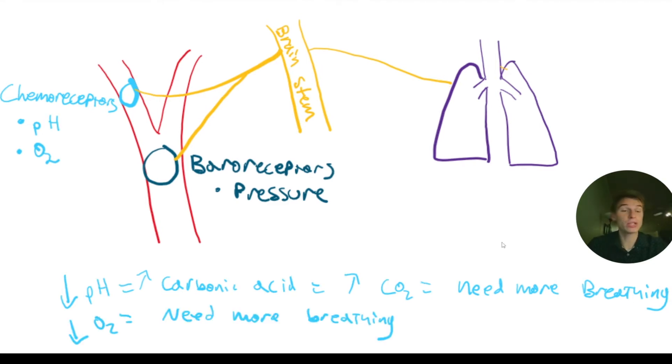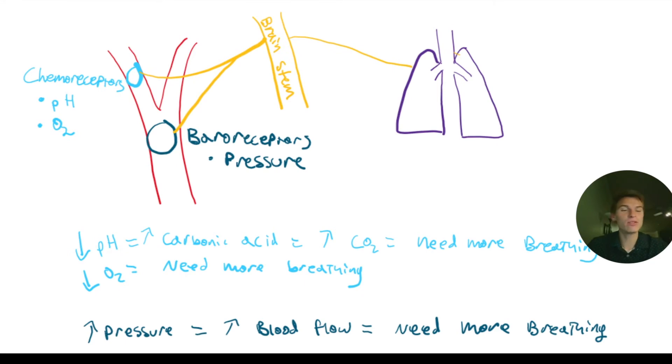Likewise, if we have decreased oxygen, that was a little bit more straightforward. It's obvious that we need to breathe harder if we don't have a lot of oxygen in our blood. And then if we have increased blood pressure, that means we have increased blood flow going through our heart, which means we have more blood that needs to get oxygenated faster. So we need to be breathing faster.